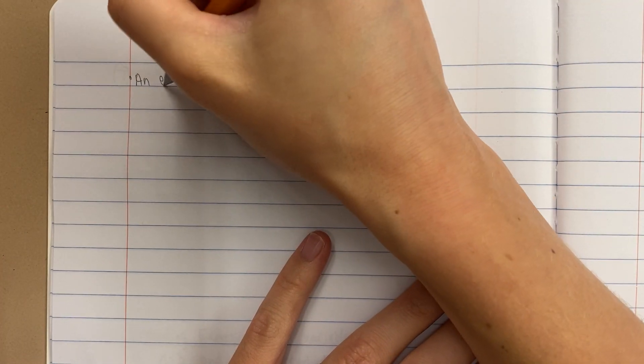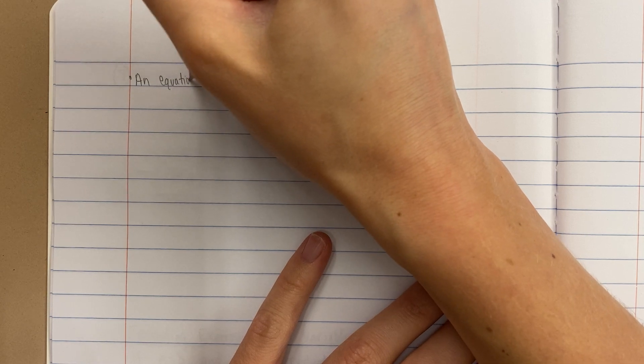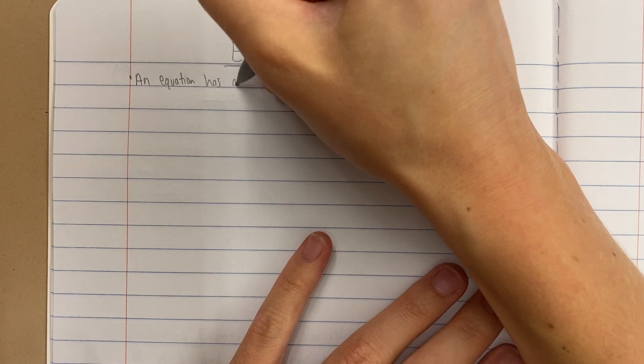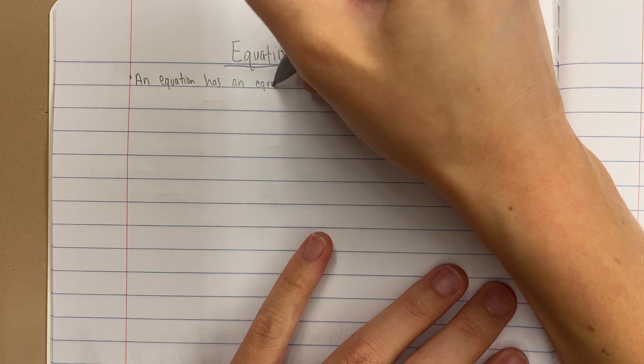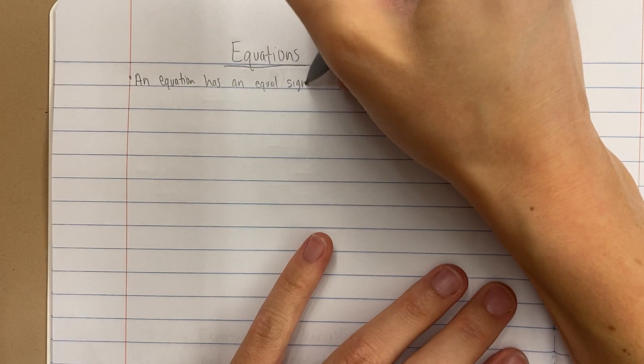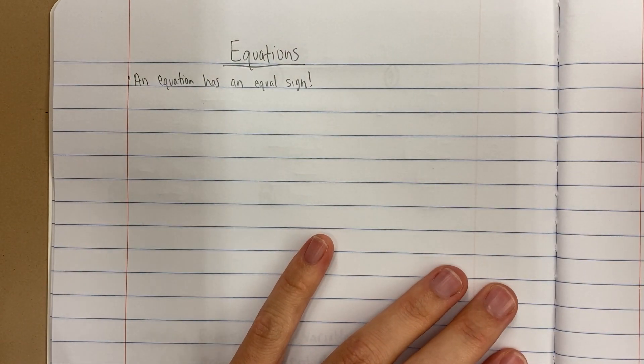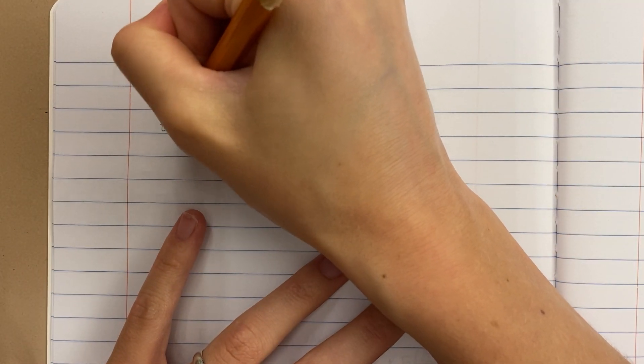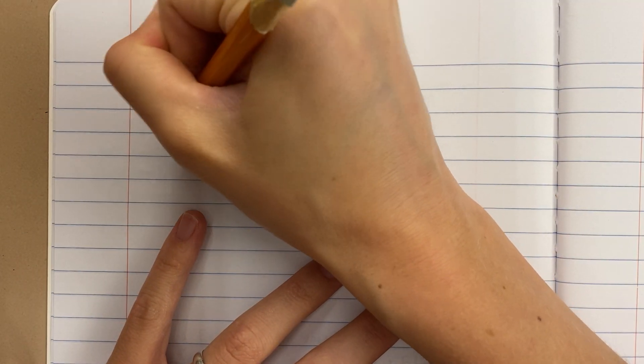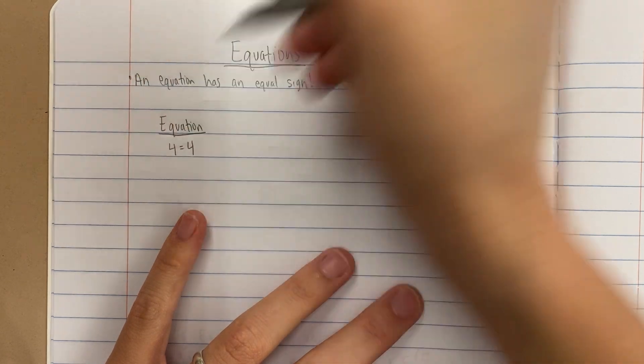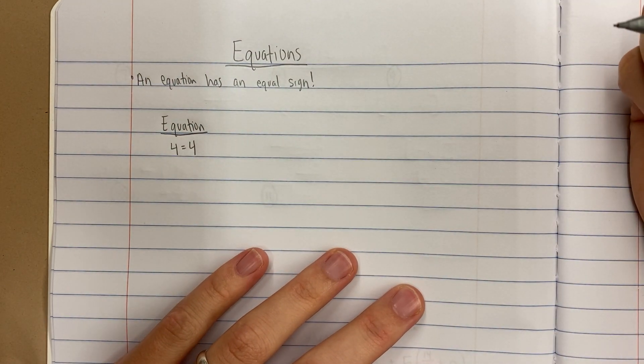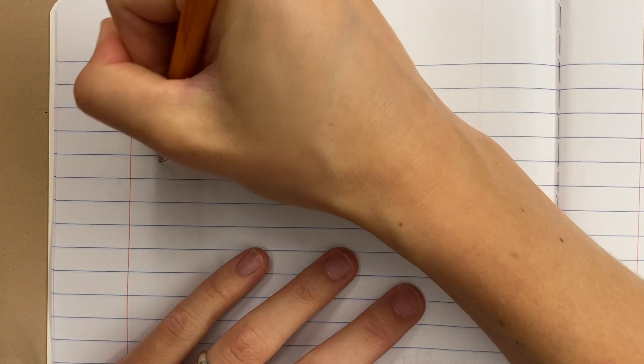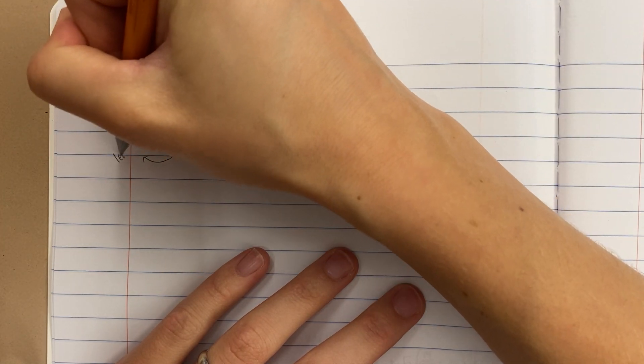An equation has an equal sign. That's what makes it an equation. So here's an equation: 4 equals 4. That's an equation.